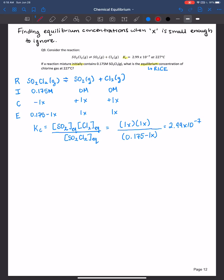I'm going to always use a different color pen. I'm going to say, well, if x is small enough to ignore, that means it's almost zero. And if we look at 0.175 minus zero, or a very small number, we can just ignore this term. And that will make the math so much easier.